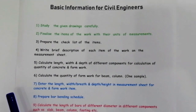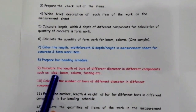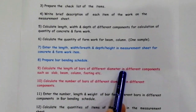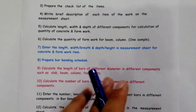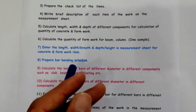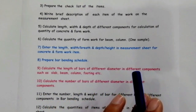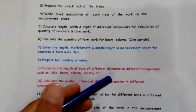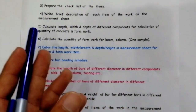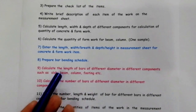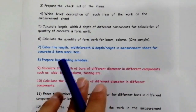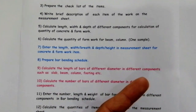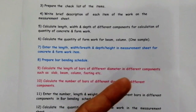The ninth point is: calculate the length of bar of different diameters for different components such as slab, beam, column, footings, etc. We have different components in building — beams, columns, slabs. If you want to find steel quantity, you find the length of each bar, because we use different diameters of steel bars in beam, column, and slab. Check the cutting length of each bar for each component, then you can find its quantity easily.